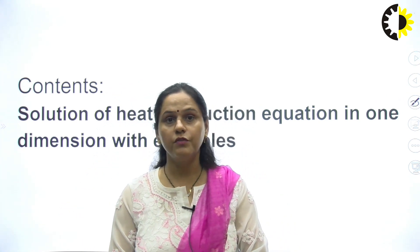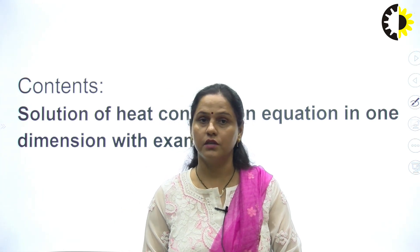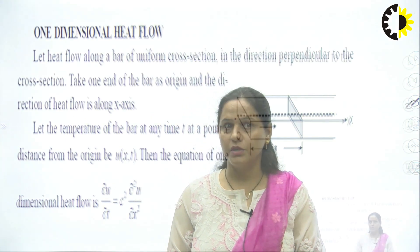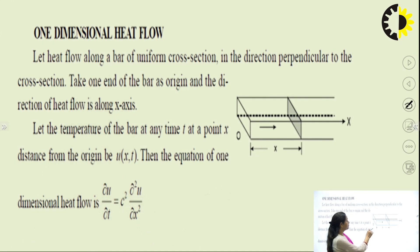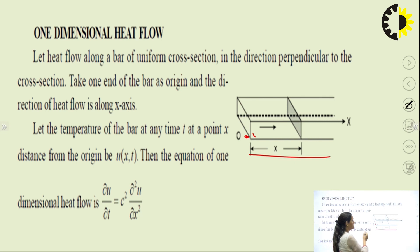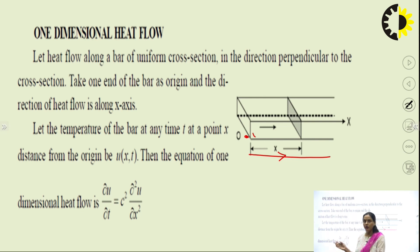Before taking examples, we will understand what is the solution of the heat conduction equation when it is in one dimension. What is one dimensional heat flow? We will assume that we have a bar of some length, with one end at the origin, and heat is flowing along the x-axis.